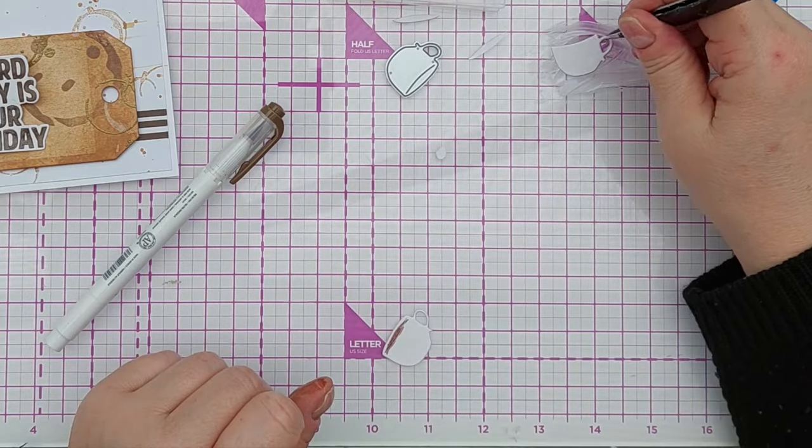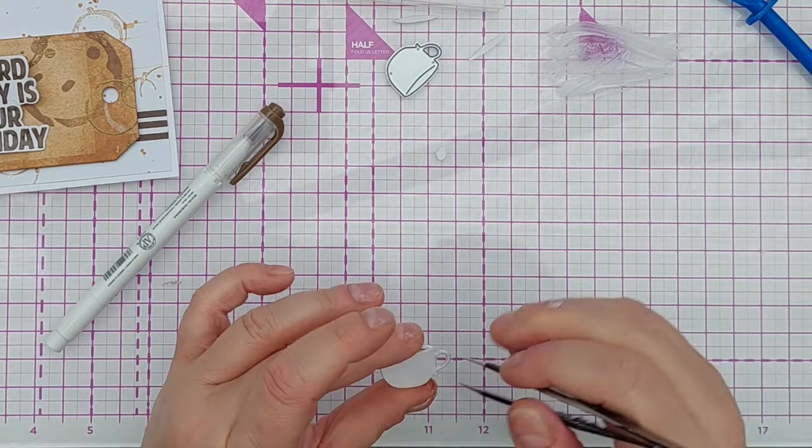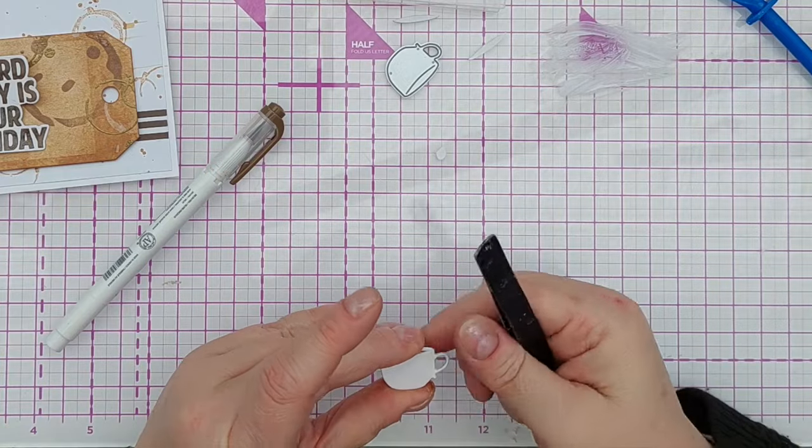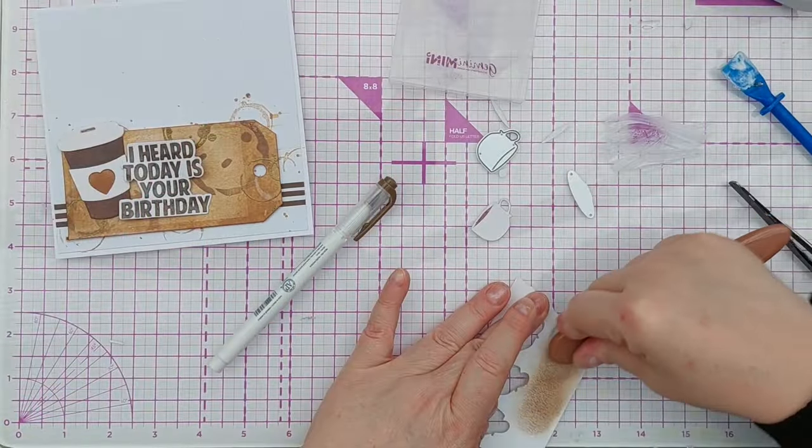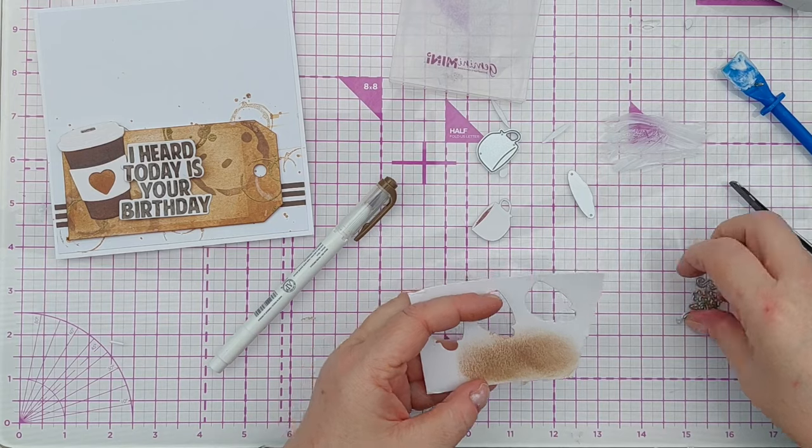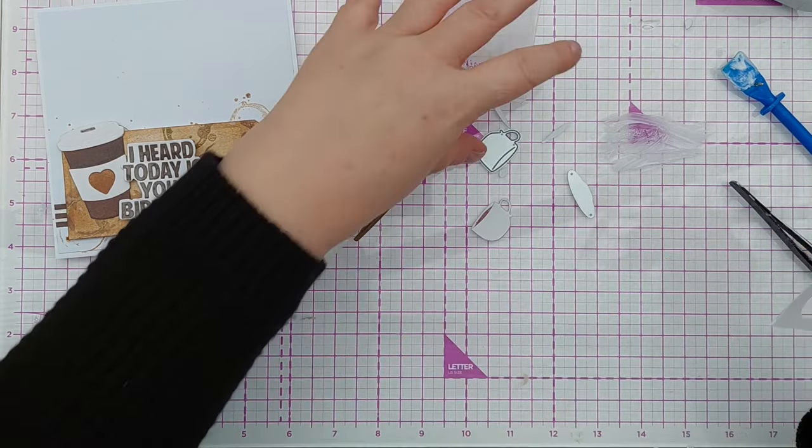I also colored a bit of card with the ink that was on my blending brush and cut out three stars and stuck those on the front of the coffee cup for a bit of detail.